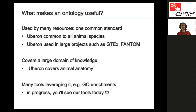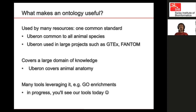What makes an ontology useful is that it is used by many resources. Uberon is designed to be common to all animal species, so it can be used in different applications — human health, farm animals, model organisms like fly, nematode, or zebrafish. It's used in large projects such as GTEx, FANTOM, and now the Human Cell Atlas. An ontology is more useful if it covers a large domain of knowledge relevant to many functions, and if there are many tools leveraging it — for example, gene ontology enrichment tools make GO directly useful. I will present tools we developed that use Uberon.